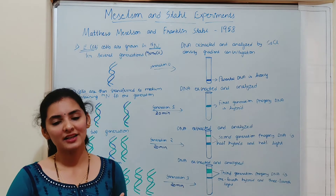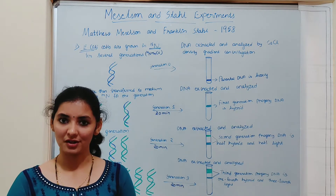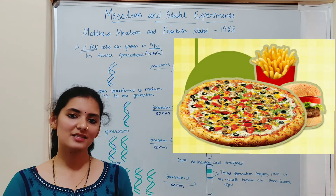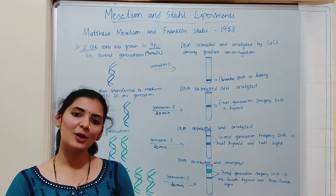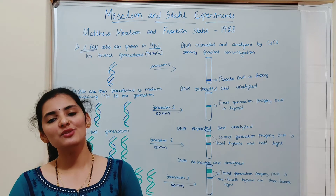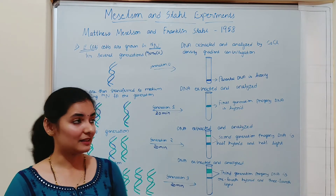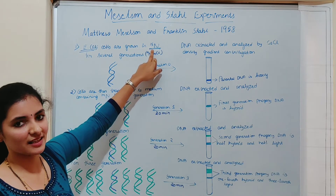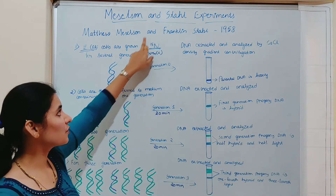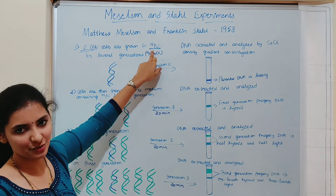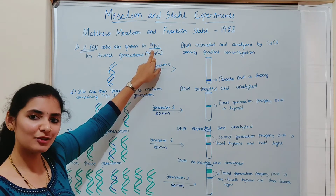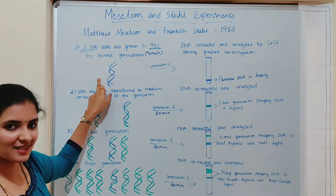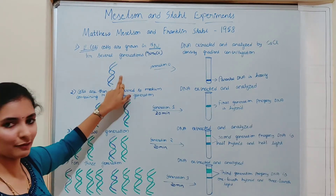This is similar to our condition during the COVID-19 lockdown. During lockdown, we were not allowed to go out to eat pizza or burger, so we stayed home and ate whatever food was available. Similarly, E. coli requires nitrogen to synthesize DNA and the only source available is heavy nitrogen, so it has no other option — it incorporates heavy nitrogen into the DNA. As a result, the DNA becomes heavy.